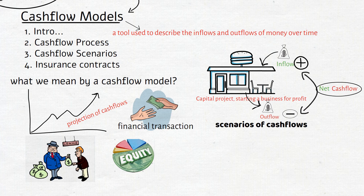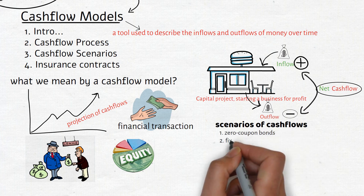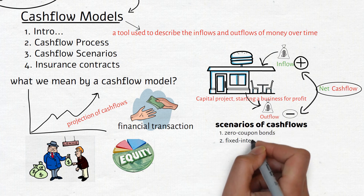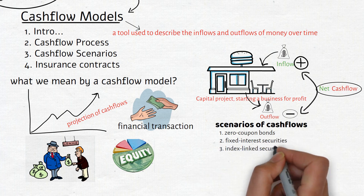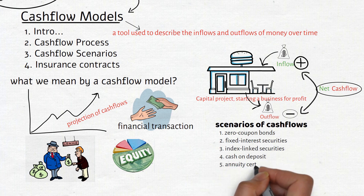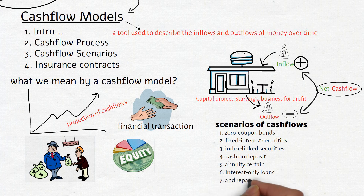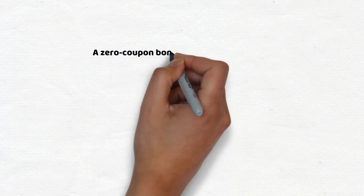Now let's explore the various scenarios of cash flows that we may encounter. I'll list these scenarios briefly and then explain them in detail. These scenarios include zero coupon bonds, fixed interest securities, index linked securities, cash on deposit, annuities, interest only loans, and repayment loans, which are also known as mortgages.